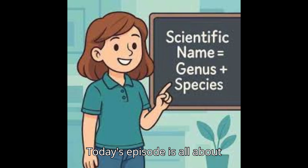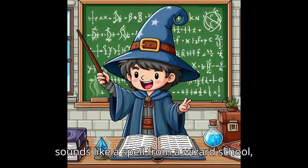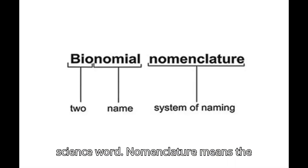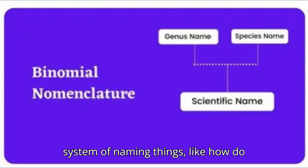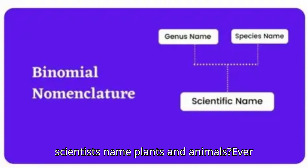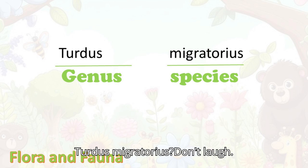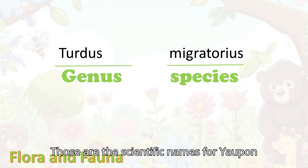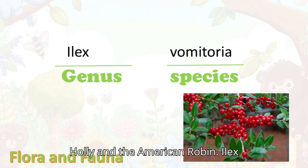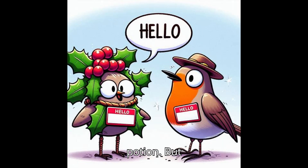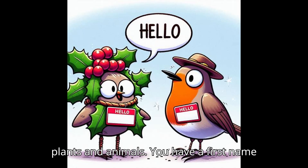Today's episode is all about nomenclature. Yeah, that sounds like a spell from a wizard school, but it's actually a super important science word. Nomenclature means the system of naming things — like how do scientists name plants and animals? Ever heard of Ilex vomitoria or Turdus migratorius? Don't laugh — those are the scientific names for yaupon holly and the American robin. Ilex vomitoria sounds like a puke potion, but think of it like a full name for plants and animals.